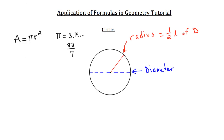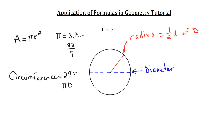The circumference of a circle is the distance around the circle, and it equals 2πr. You can also use the equivalent formula πd, where d is the diameter, since the diameter equals 2 times the radius. Don't confuse πr² and 2πr — they're very similar formulas but there's a huge distinction between them.